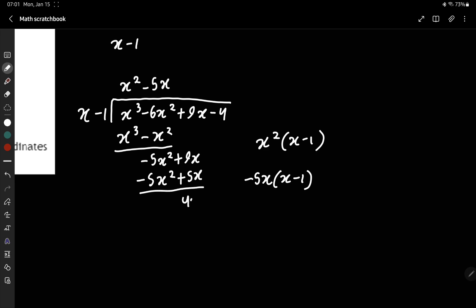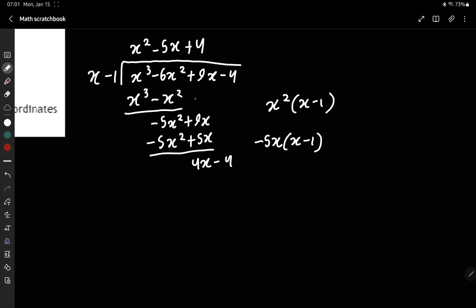Subtract that. 4x minus 4 divided by x gives plus 4. We see that comes out to zero, meaning no remainder, which is good.